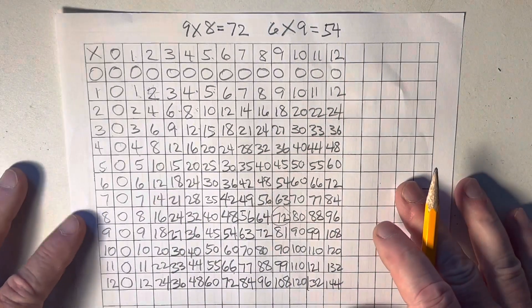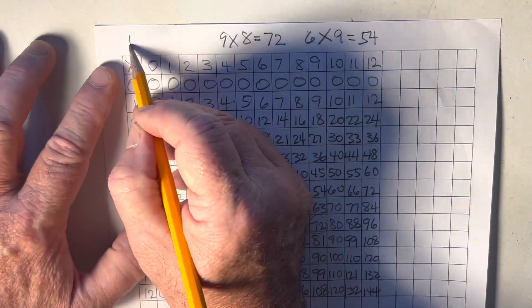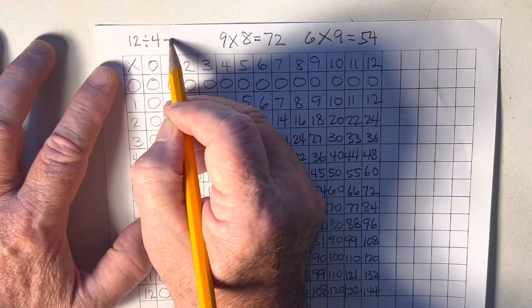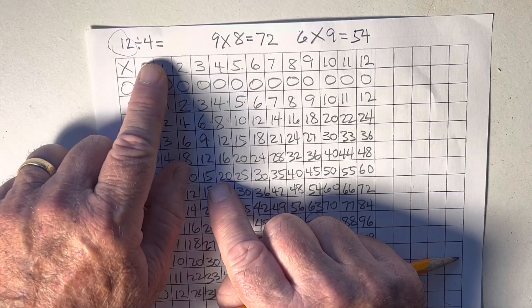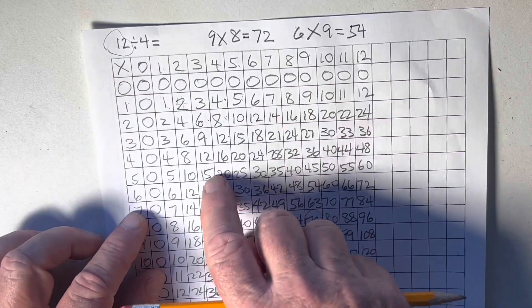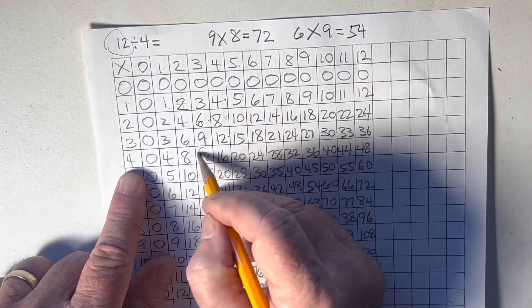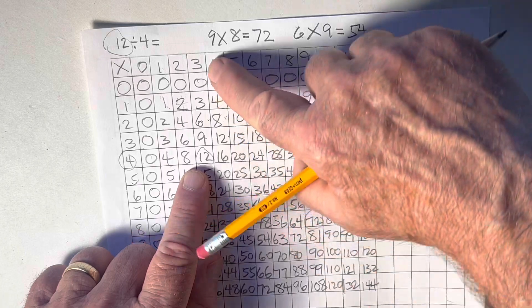Now, we can do division with this also. Let's say we've got 12 divided by 4. 12 divided by 4. 12 is the dividend. 4 is the divisor. This is red. 12 divided by 4. So, I find my 12 and the 4. Find the two numbers together. Here they are right here. 12 and 4. So, I know that 12 divided by 4 is 3.